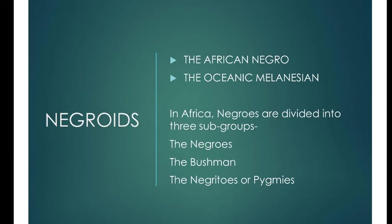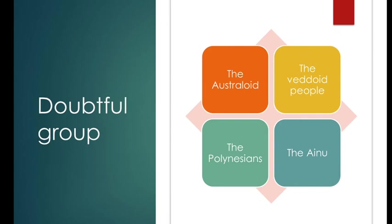Next are the Negroid races. This group consists mainly of two large groups: the African Negro and the Oceanic Melanesian. In Africa, the Negroes are divided into three subgroups: the Negroes, the Bushmen, and the Negritos or Pygmies. The Negroes occupy the rainforest lands in equatorial Africa near the Congo Basin. The Bushmen are found mainly in the Kalahari Desert in southern Africa. The Negritos or Pygmies are most difficult to understand because their representatives are found outside equatorial Africa, such as in the Philippines, the Malay Peninsula, minor islands, and New Guinea.